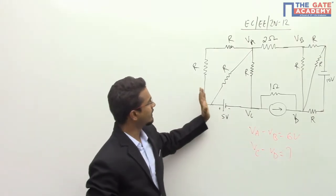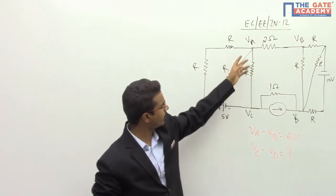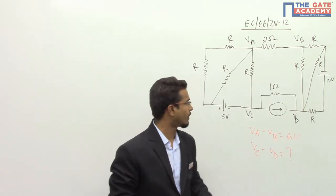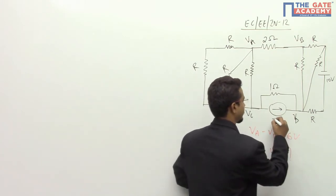And in this particular question they have provided this circuit and they have provided this much information that VA minus VB is equals to 6 volt and they are asking what is the voltage across VC and VD where this current source value is 2 milliampere.